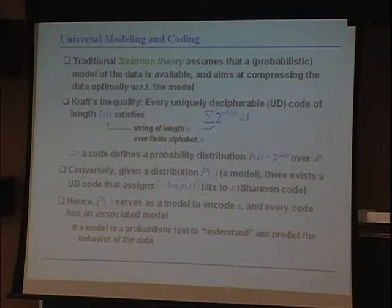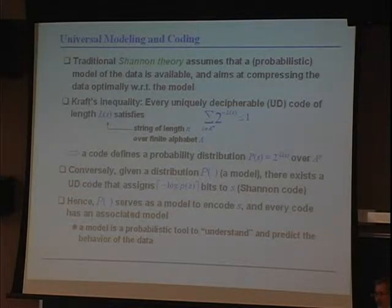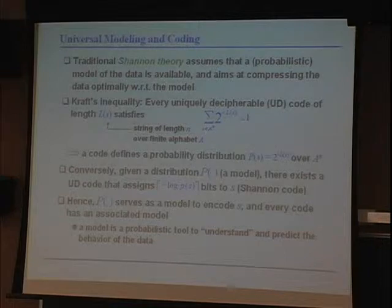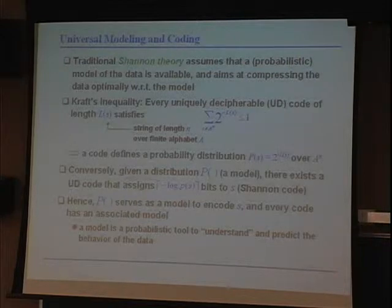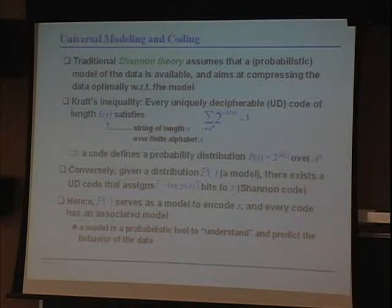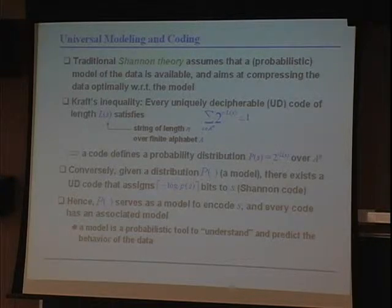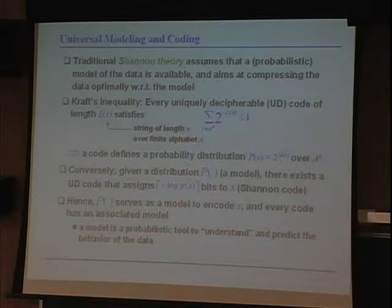Let me go through a few slides with basic ideas of universal modeling and coding to introduce the image compression and image denoising problems. What is universal modeling? Start with traditional Shannon theory, which assumes you have a probabilistic model of the data. You have data you need to compress, and it assumes you have a probabilistic model and aims to compress the data optimally with respect to that model. What is the relation between codes and model?